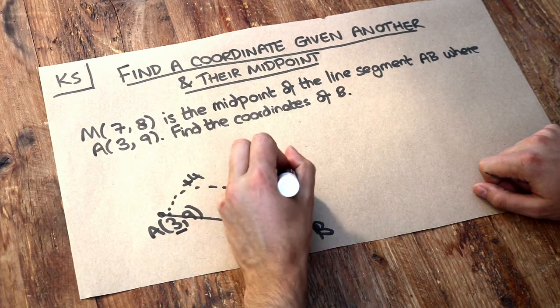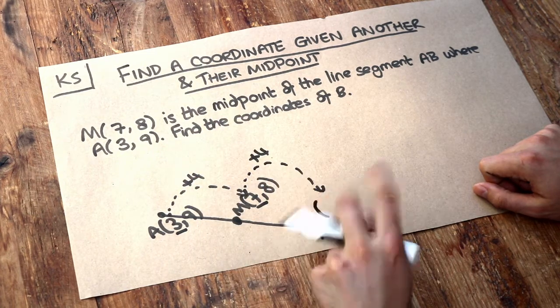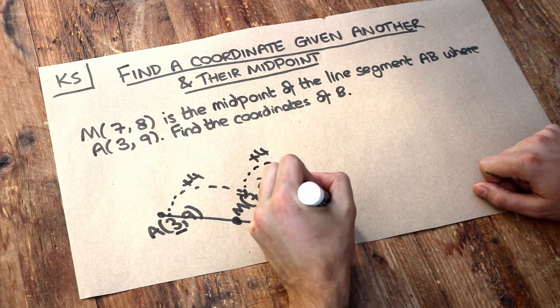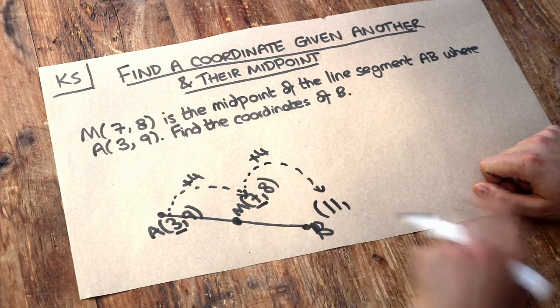So if we add 4 again to the x value, can you see that the x value is going to be 7 plus 4, which is 11? So we can just think of this as a sequence. It's going up in 4s, these x values.